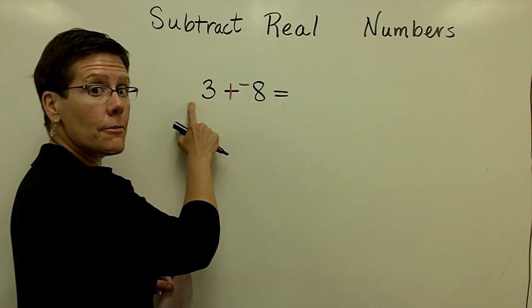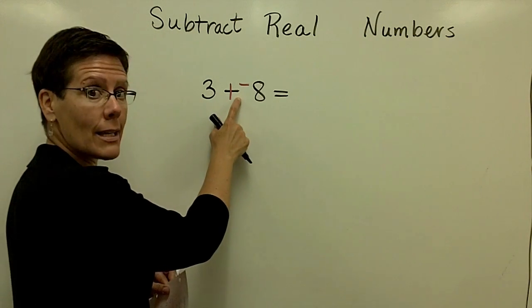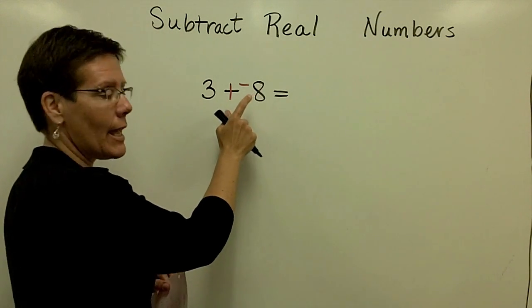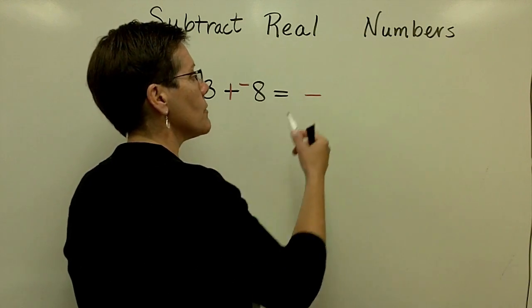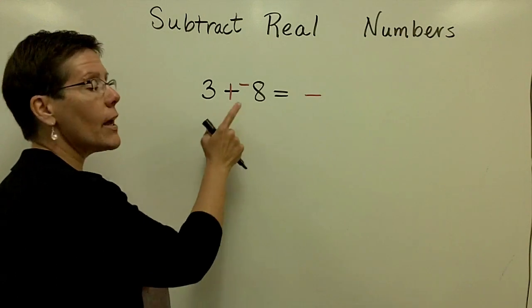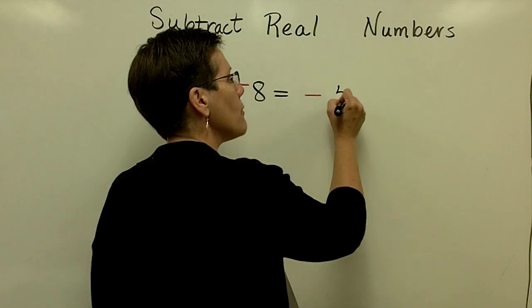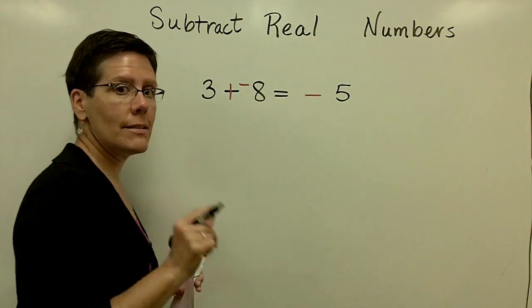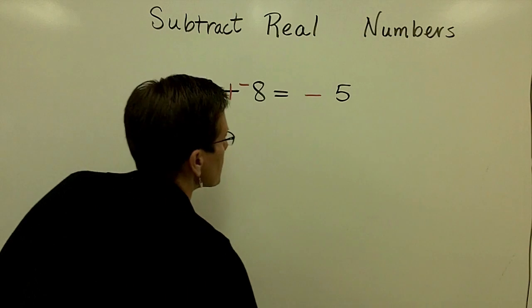These two numbers have different signs. One is positive, one is negative. The 8 has more pull. I know that my answer is going to be negative because of the sign in front of the 8. I take their absolute values, the 8 and the 3, and I subtract them and I get 5, making sure again that my sign with the greatest pull is in front of my answer. Let's do another.